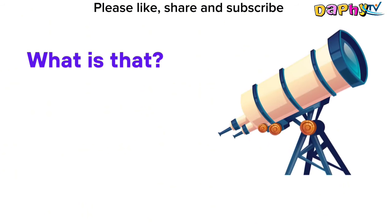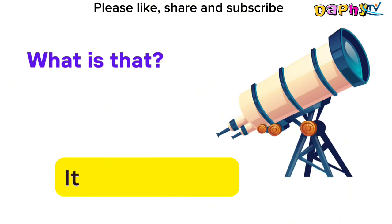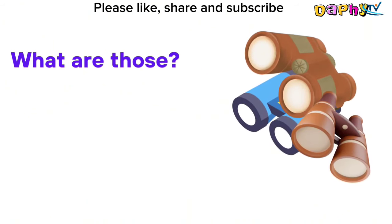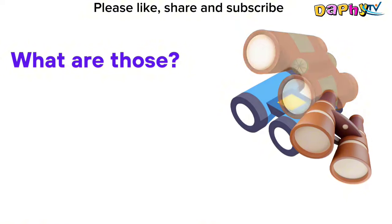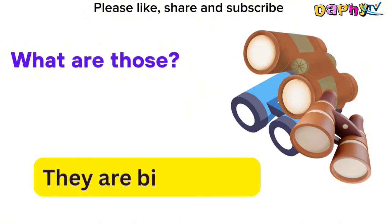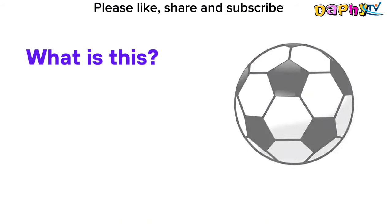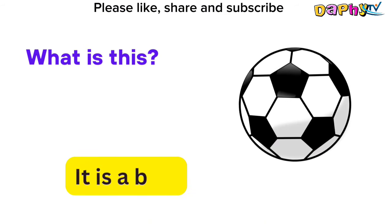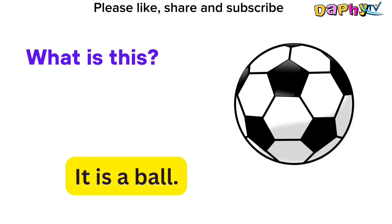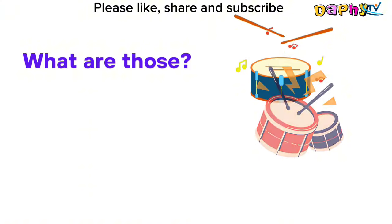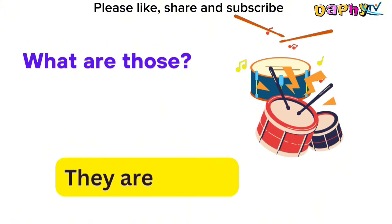What is that? It is a telescope. What are those? They are binoculars. What is this? It is a bull. What are those? They are drums.